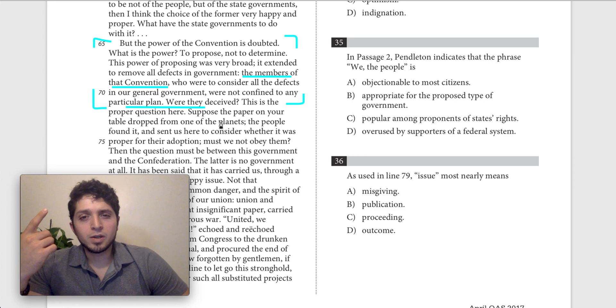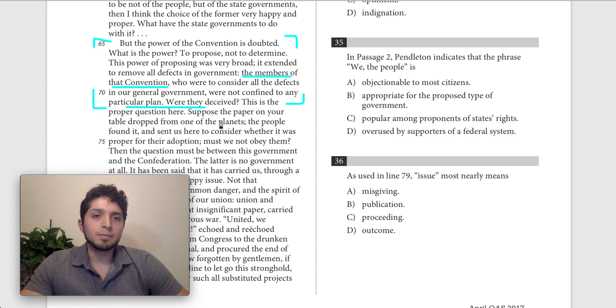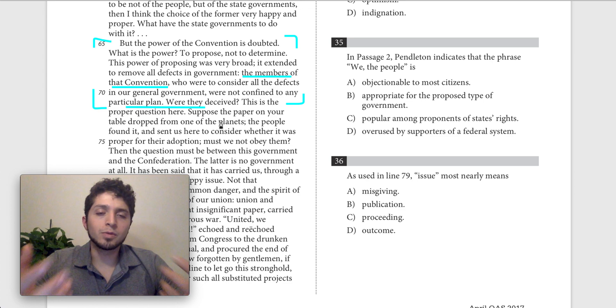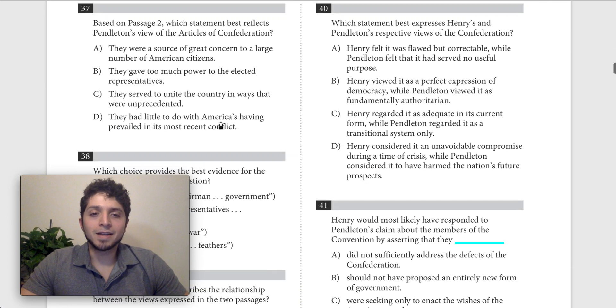And we should sort of already have the intuition that elsewhere Henry sort of had maybe claimed that they did overstep their boundaries, that they only were supposed to make amendments to the Confederation, not to entirely replace it, that they stepped over too much power. So we should kind of expect to find a text that will match that.